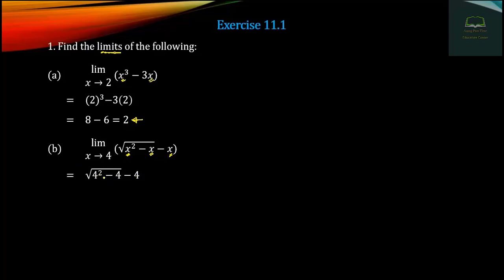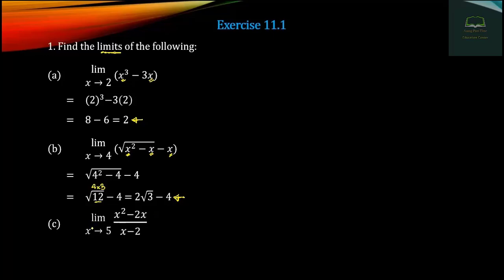4 squared is 16, 16 minus 4 is 12, and square root of 12 minus 4. So 4 is 2 squared minus 2 to the 3rd minus 4. We can write the limit of h to 5 of h squared minus 2h by h minus 2. Substituting h equals 5, we get 25 minus 10, which gives us 15.